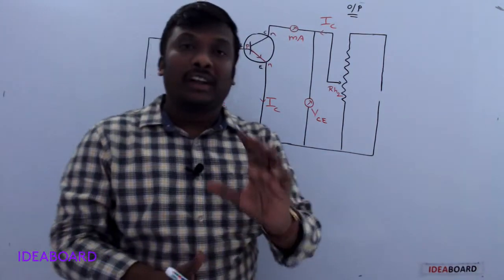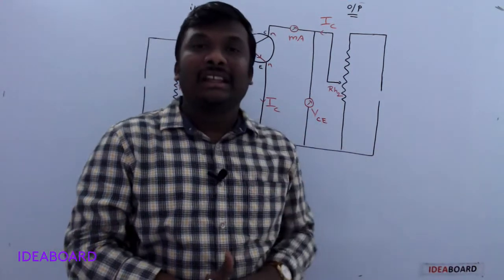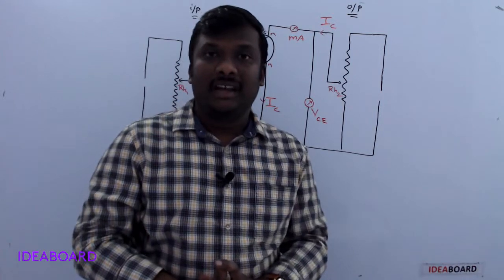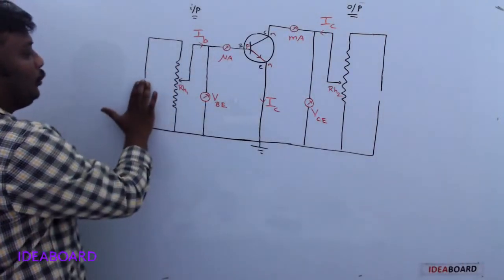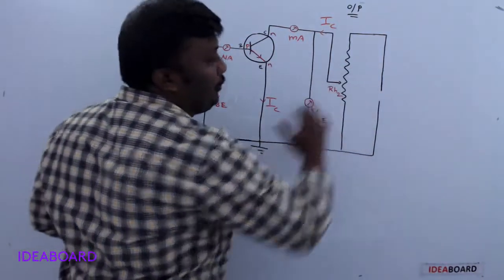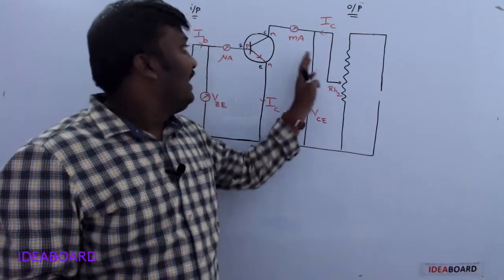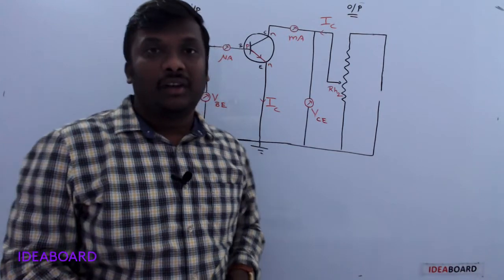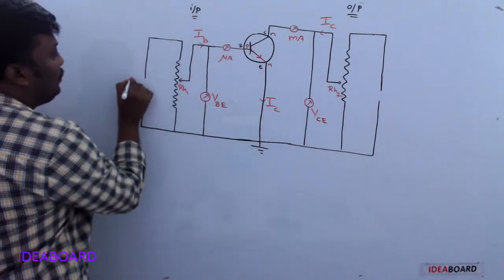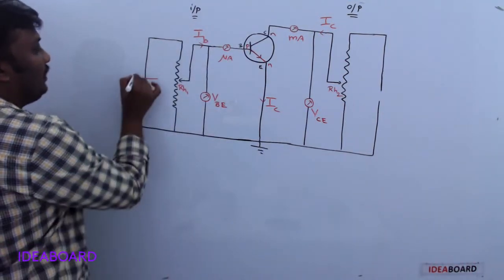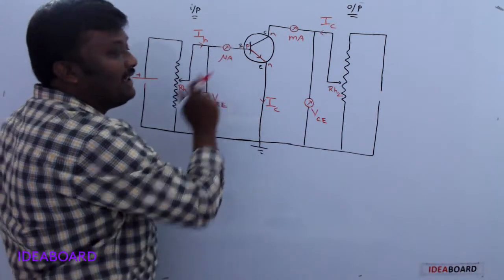The NPN transistor requires proper biasing — only then the transistor is in the active state. For biasing, two batteries are connected: one for input, one for output. The emitter junction is always in forward bias and the collector junction is always in reverse bias. Forward bias means P is connected to the positive terminal of the battery.